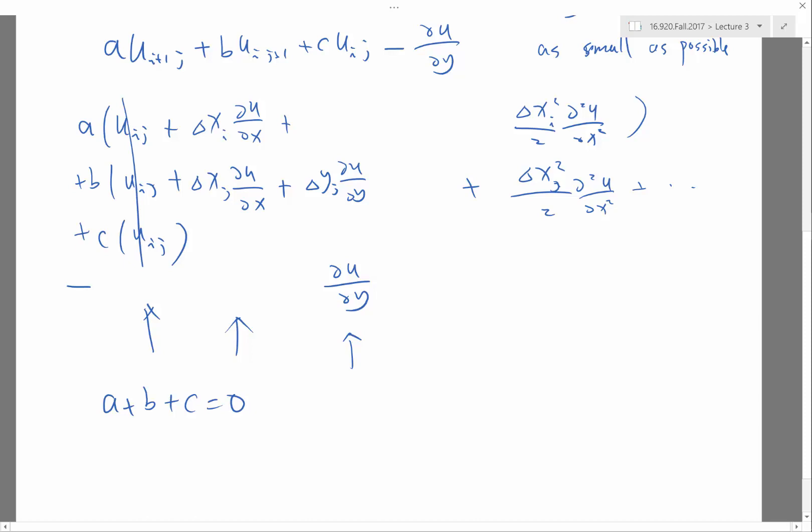And then I would have A times Delta X I plus B times Delta X J would be equal to zero, so that this term would cancel.